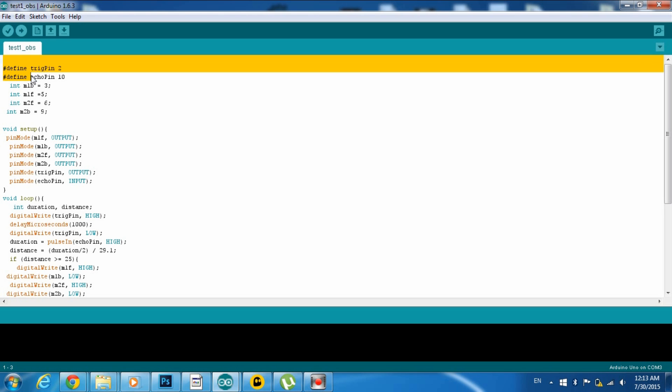So now to explaining the code. In the first two lines, I am defining the trigger and echo pin as pin 2 and 10. This is basically where they are connected on the Arduino. Here I am defining the four inputs of the H bridge. Here I am setting all the pins as outputs except for the echo pin, which is input as we expect a signal to be received.